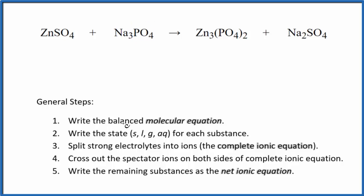The first thing we need to do with net ionic equations, we need to balance the molecular equation. This is our molecular equation. I can see that I have three zinc atoms here and just one here. So I'm going to start by putting a three in front of the zinc sulfate.